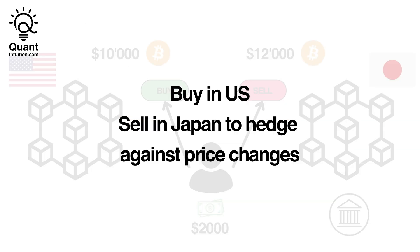Furthermore, there's a strong connection between hedging and arbitrage. Arbitrage essentially means that we buy and sell a product at the same time. Furthermore, we protect, or in other words, hedge ourselves against price movements in the product itself by having a flat position and isolating our edge.